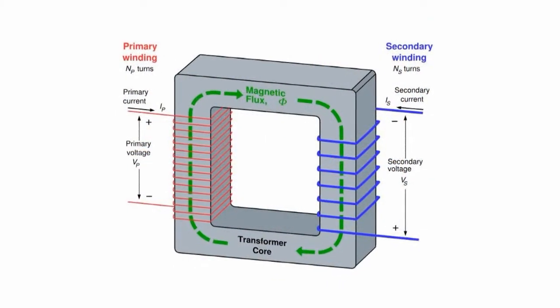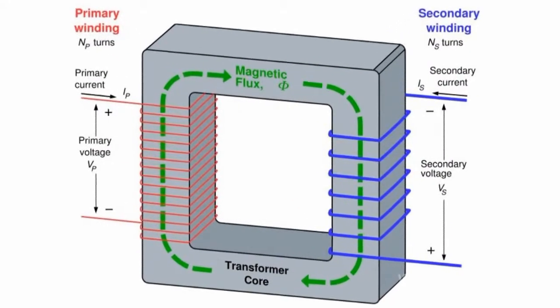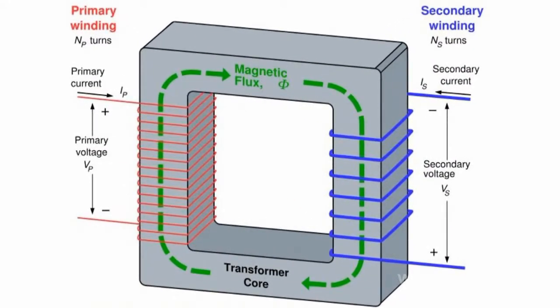Voltage from an external alternating current source is applied to the primary. Alternating current passing through the primary creates alternating magnetic flow in the transformer core. As a result of electromagnetic induction, the alternating magnetic flow in the transformer core creates electromotive intensity of induction in the windings, including the primary.